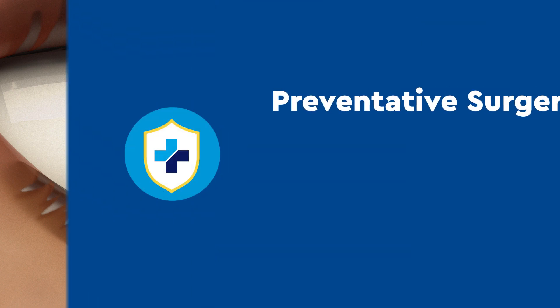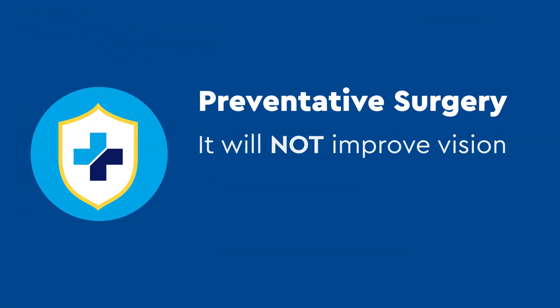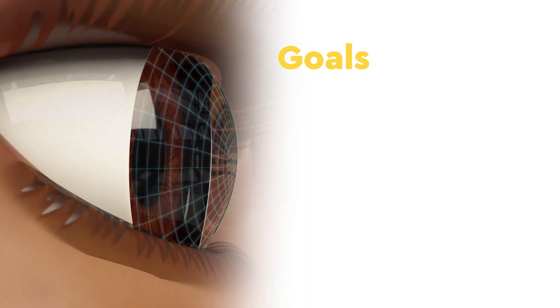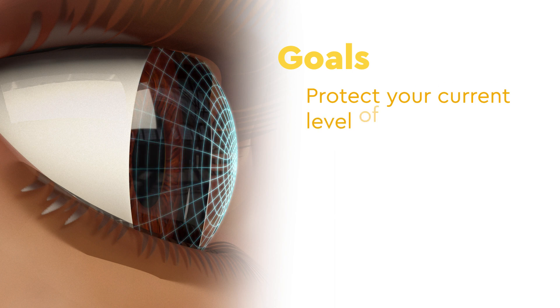Corneal crosslinking is a preventative surgery, so it will not improve vision that is already blurry from keratoconus. The goal of the procedure is to protect your current level of vision by locking the cornea in its current shape,